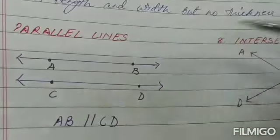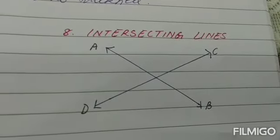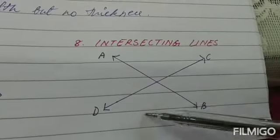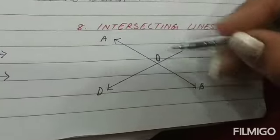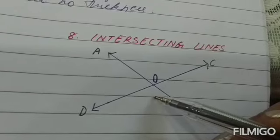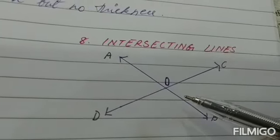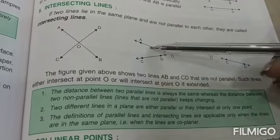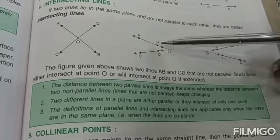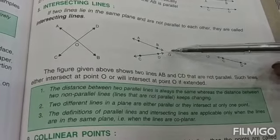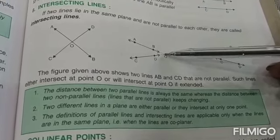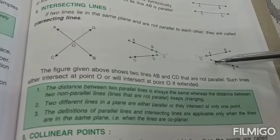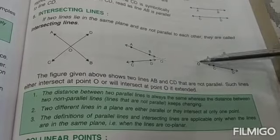Next are intersecting lines — a pair of lines that touch at one single point. Looking at AB and CD, they touch at point O, so they are intersecting lines. It is not always necessary that two lines are already touching; sometimes they don't touch yet but appear to intersect when extended. With dotted extensions, you can see they will meet at point O. So AB and CD are intersecting lines, and similarly, any two lines that will touch when extended are also called intersecting lines.